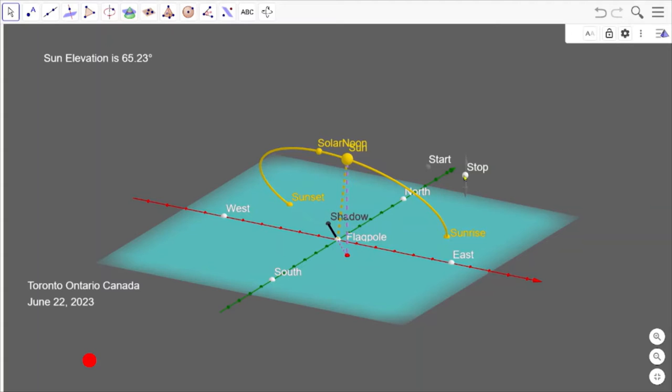The shadow is going in the opposite direction. It's now crossing solar noon and making its way around to sunset.